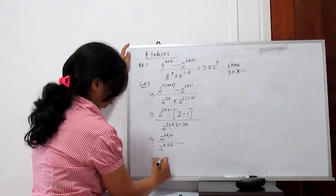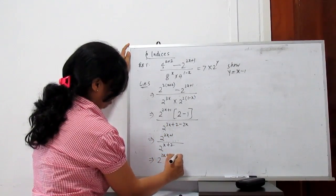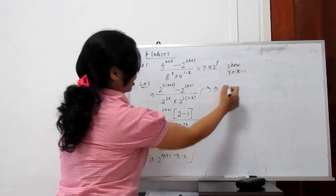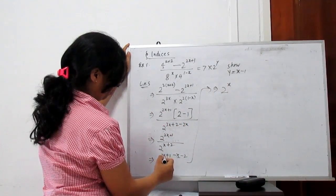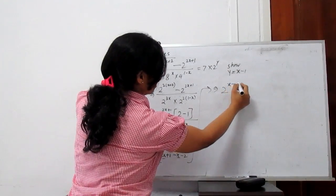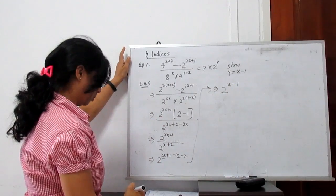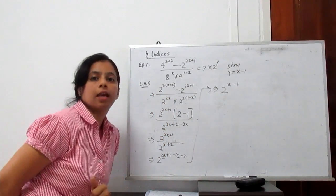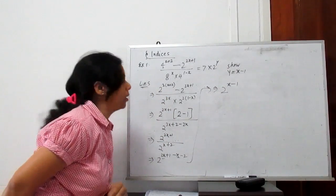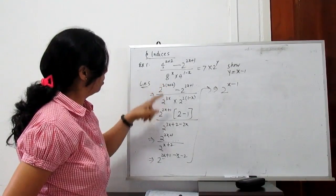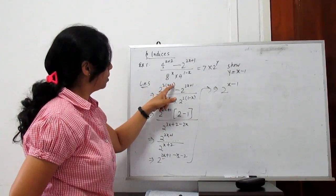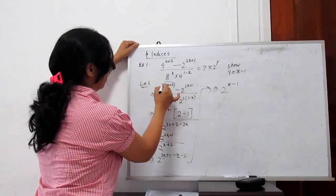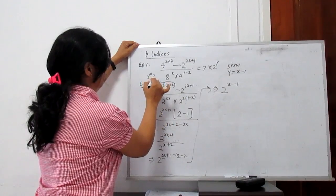Again, applying the division law: 2 to the power 2x plus 1 minus x minus 2, which gives 2 to the power x minus 1. Now splitting the term 2 to the power 2x plus 2 gives 2 to the power 2x times 2 to the power 4.